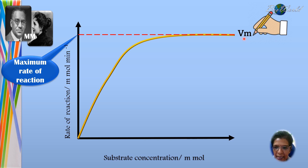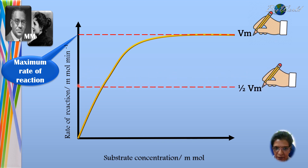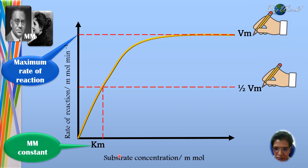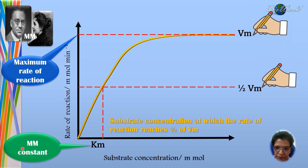If we want to determine the Km value, we have to determine half of Vmax. For example, if Vmax is 10, then half of Vmax would be 5. At the point of 5, we draw another line for the rate of reaction that reaches half of the maximum rate of reaction. Then we find the intersection between the curve and the line for half of Vmax, and extrapolate downwards to determine the substrate concentration. That substrate concentration is called Km, also known as the Michaelis-Menten constant — the substrate concentration at which the rate of the enzymatic reaction reaches half of the maximum rate of reaction.